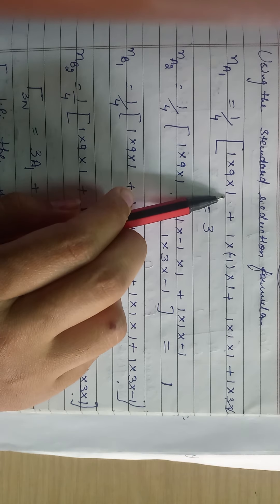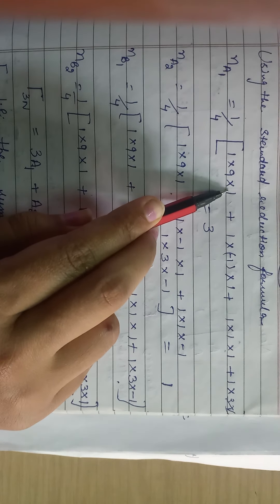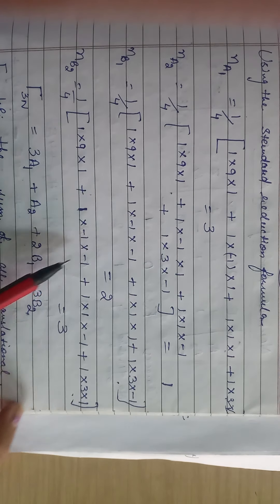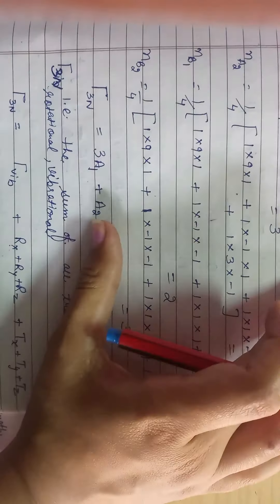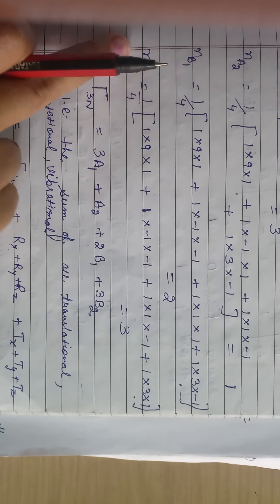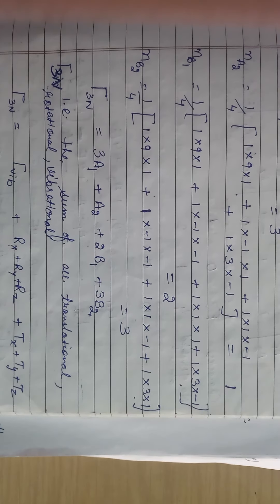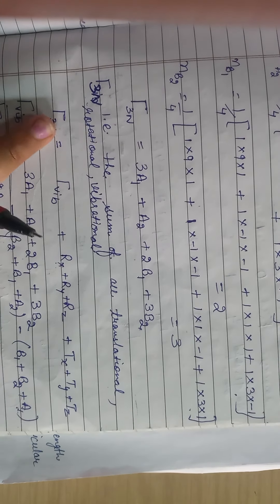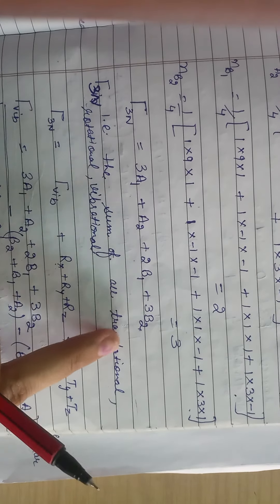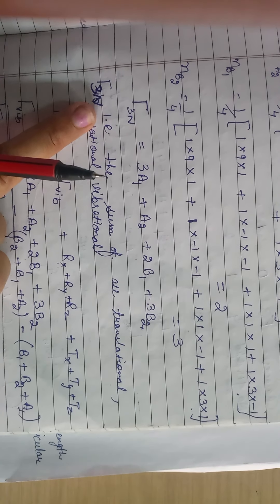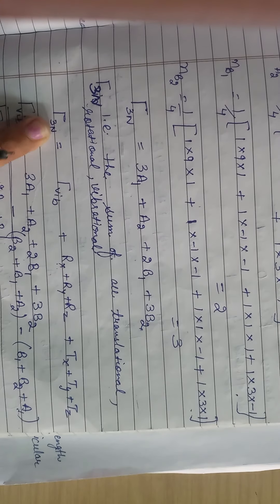Ab hum dekhte hain ki aapke respective molecule ke translational motion, rotational freedom, aur vibrational motion bhi hain. With the help of this formula we develop the relationship between vibrational modes — kis kitni vibrational modes hongi aapke particular molecule mein. Main sabse pehle basic formula leke chal raha hoon. Water molecule ka point group kya hai — C2V.